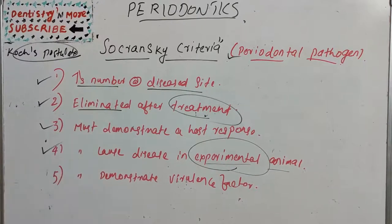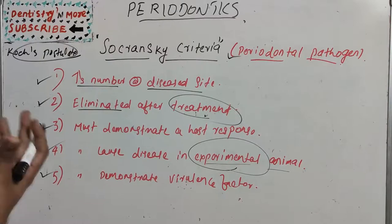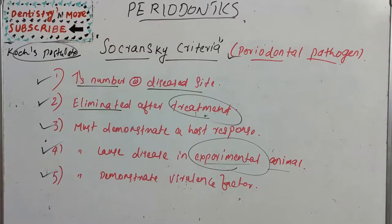The fifth criterion is that it must demonstrate virulence factors responsible for enabling the microorganism to cause destruction of periodontal tissues. Virulence factors are molecules that help bacteria colonize and destroy periodontal tissues. If this is demonstrated, we can call the organism a periodontal pathogen.